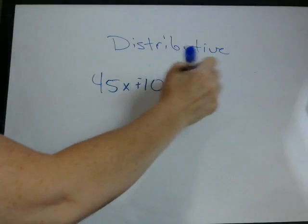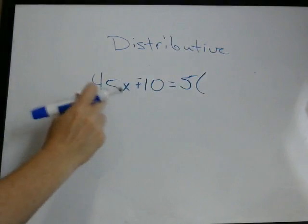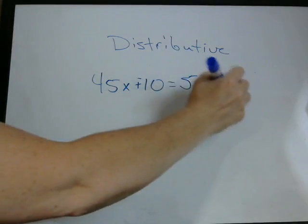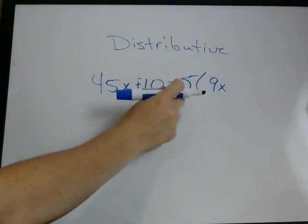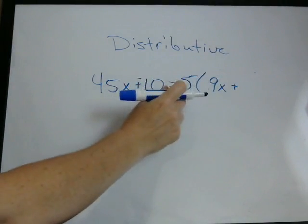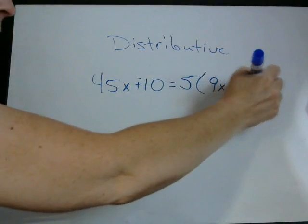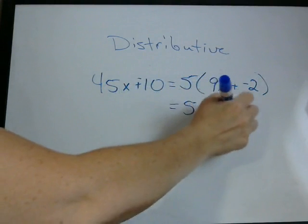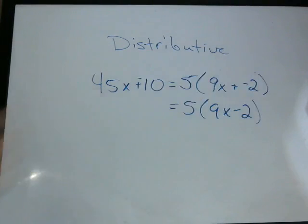45 divided by 5 is 9. Remember it's 45x, so it's 9x. 45x divided by 5 is 9x plus negative 10 divided by 5 is negative 2. And we can write that as 9x minus 2.